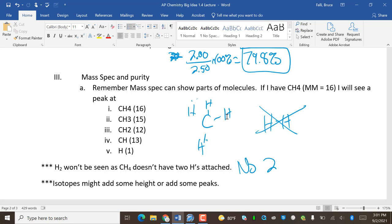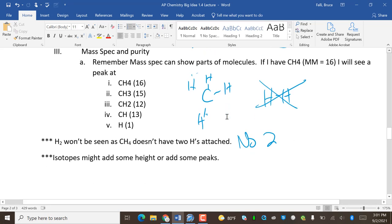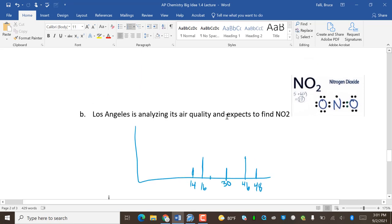So sometimes we add isotopes that will be very small. You know, like the most common carbon is 12. But if we're talking about molecules, you don't see that as much. So let's take a looky, looky, looky. Los Angeles is analyzing its air quality and expects to find NO2. So NO2 has a structure like this. So if this is the structure that you expect from NO2, I expect to see O alone. I expect to see ON. So 16 plus 14 is 30. I expect to see ONO, which is 46. I don't expect to see O2O. Make sense?